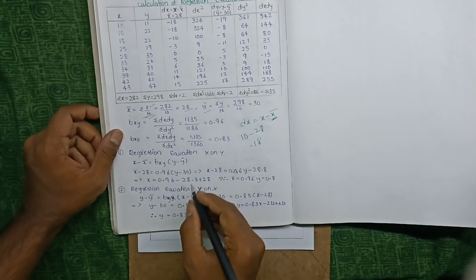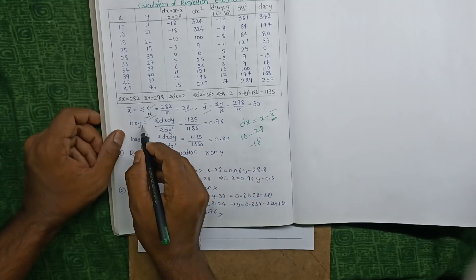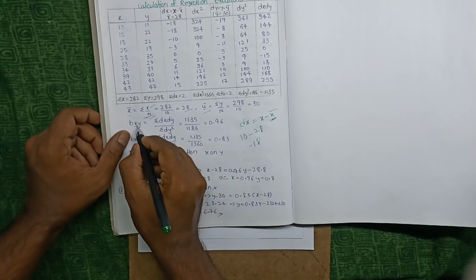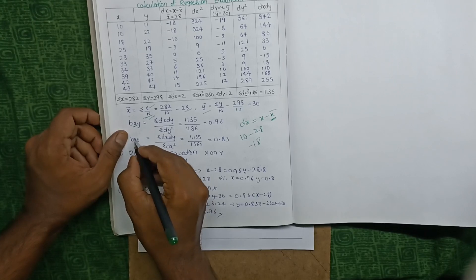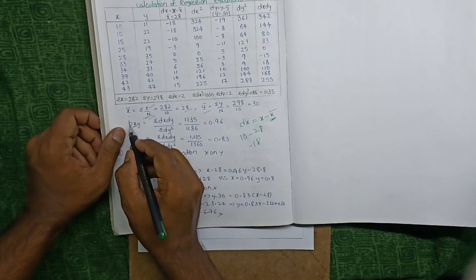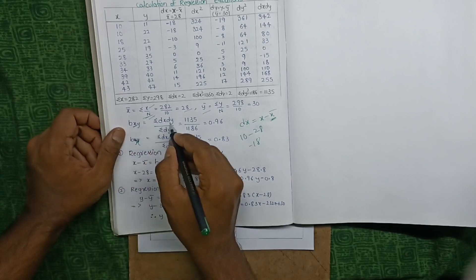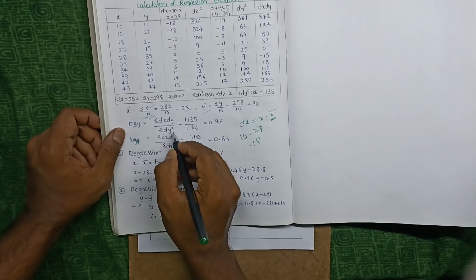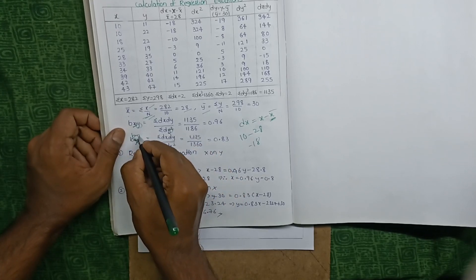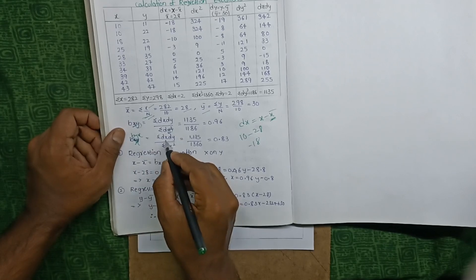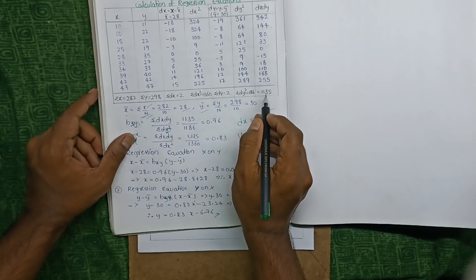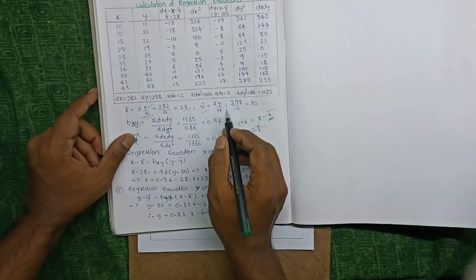bxy equals sigma(dx·dy) divided by sigma(dy²). For byx, the formula is sigma(dx·dy) divided by sigma(dx²). Substitute the column totals into these formulas to get the values of bxy and byx.